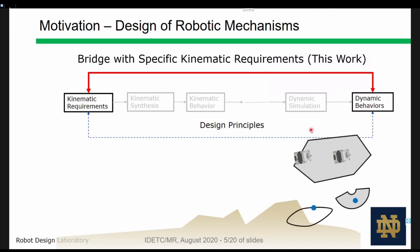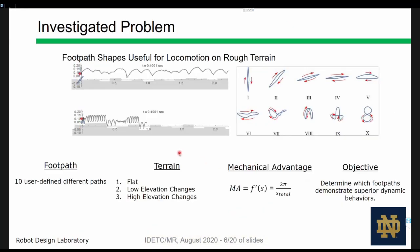Instead of directly searching for useful mechanisms, we search for a coupler point path that results in desirable dynamics. These paths may serve as kinematic design requirements to be integrated with existing synthesis techniques. As a necessary step, we exclude kinematic synthesis altogether. In this paper, we investigate the performance of 10 different coupler curves on various flat and uneven terrains. The objective is to determine which footpaths allow the robot to move furthest forward across these terrains.